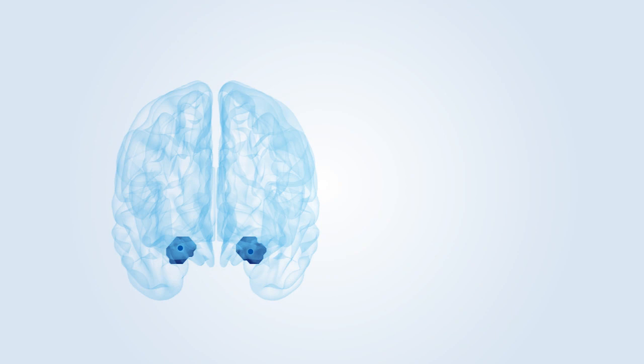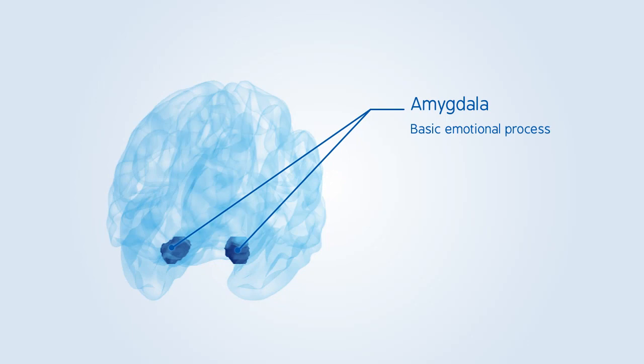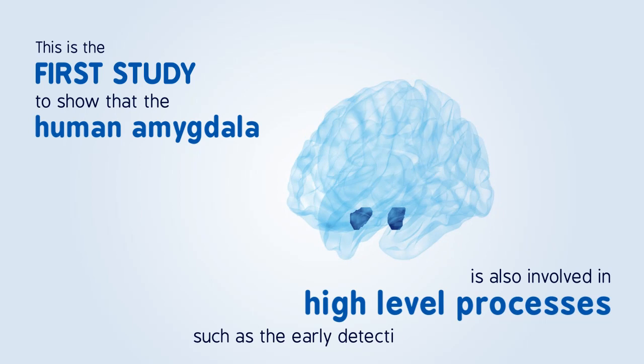The human amygdala has long been believed to support basic emotional processes. In addition to confirming this, our study is the first to show that this structure is also involved in high-level processes, such as the early detection of the intention to harm.